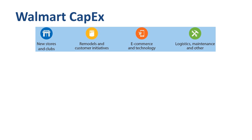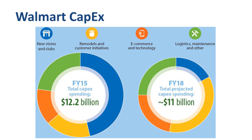That picture changes under Walmart's current capex plan for FY18. New stores and clubs — the largest capex category in FY15 — will become the smallest spending category in FY18. Most of the capex spend will now go to remodels and customer initiatives, logistics and maintenance, and e-commerce and technology. In short: lower overall capex spending and a reallocation in line with new strategic priorities.